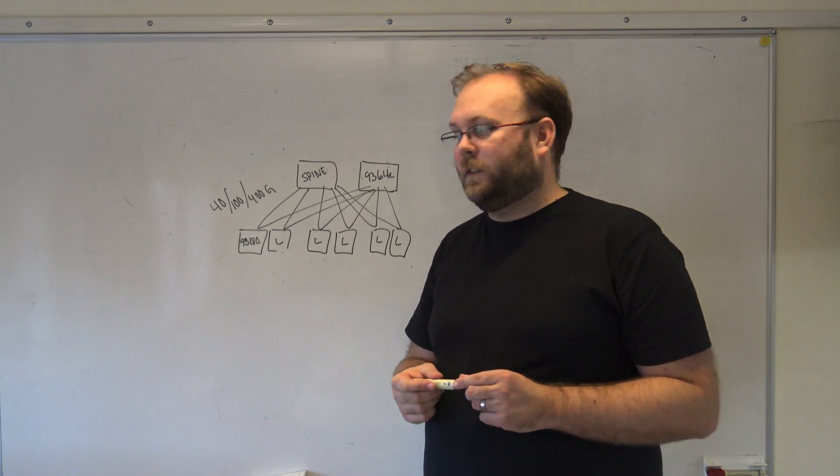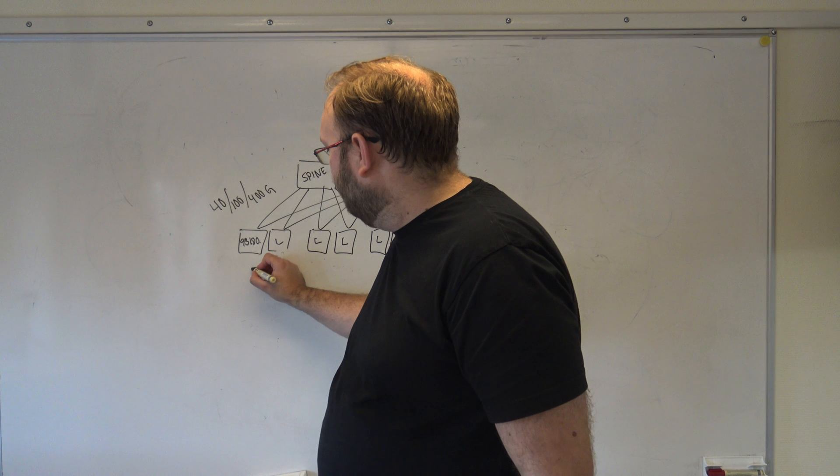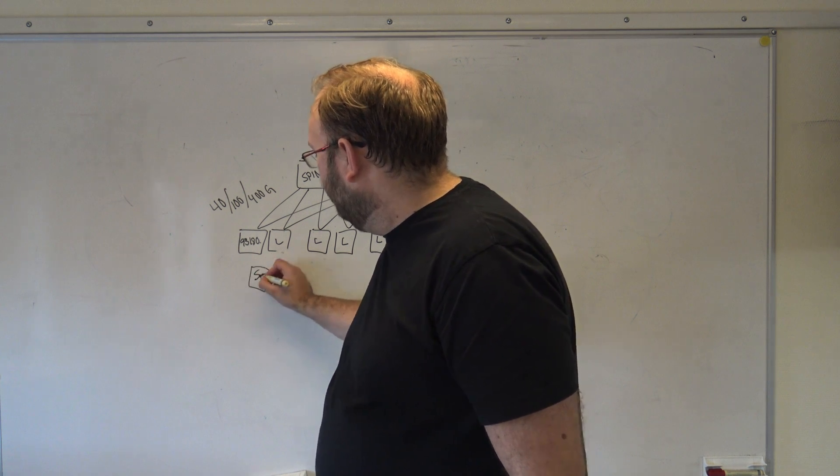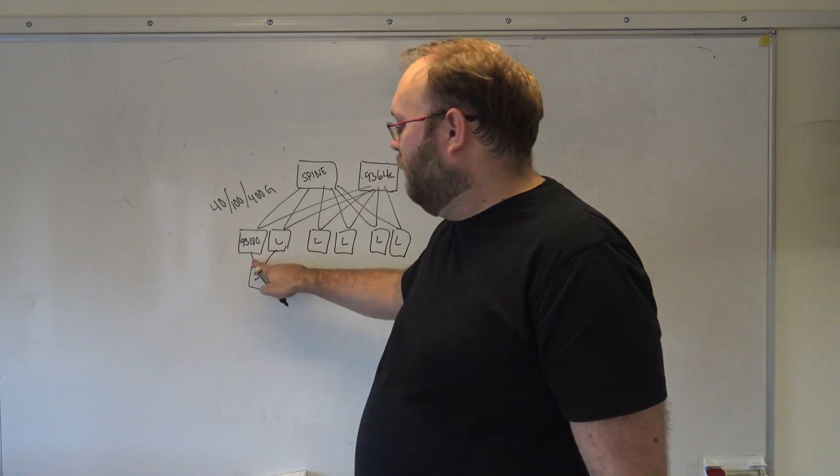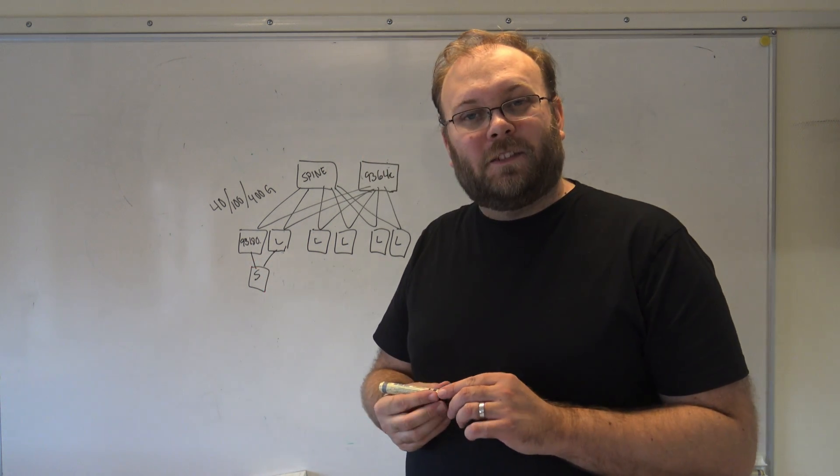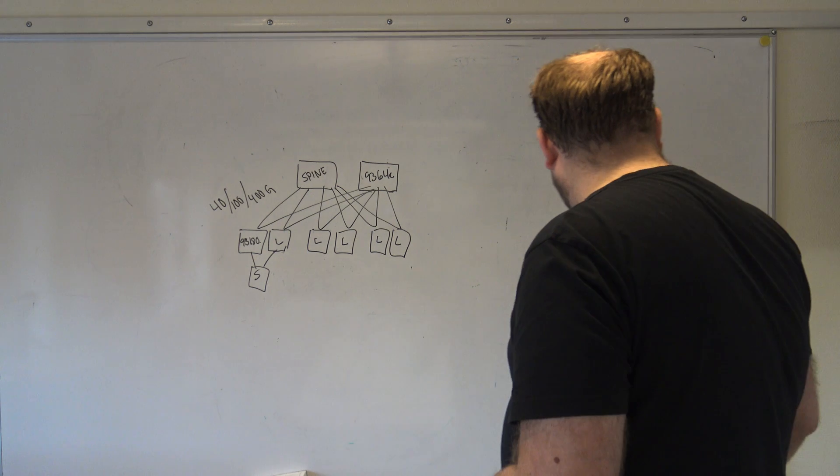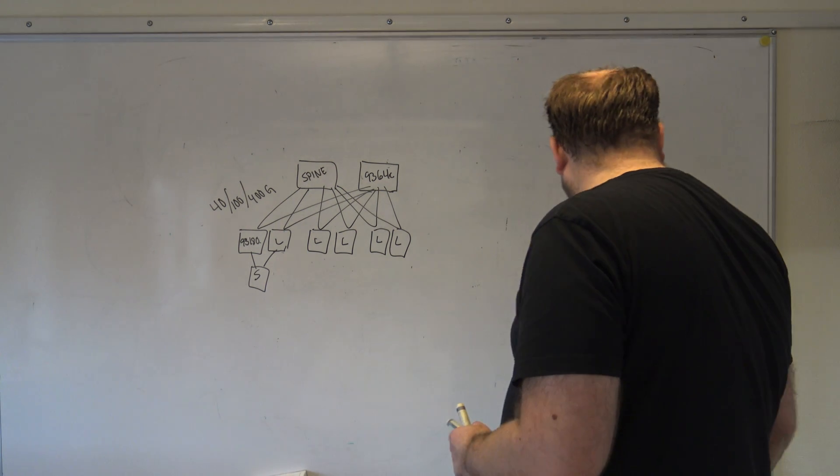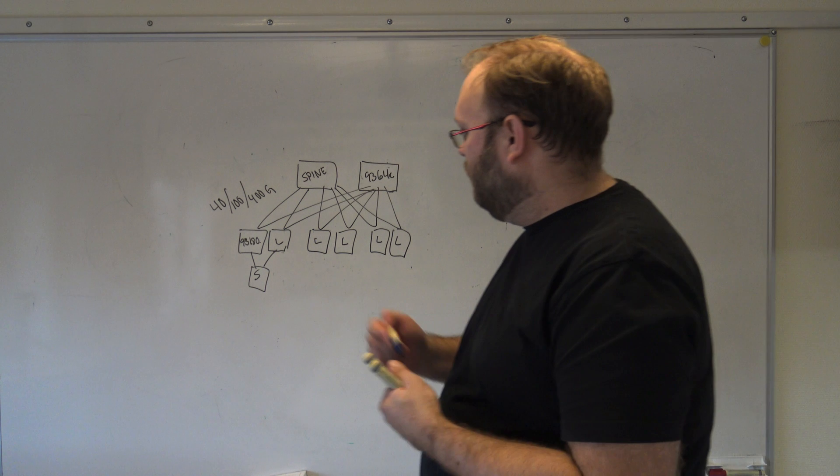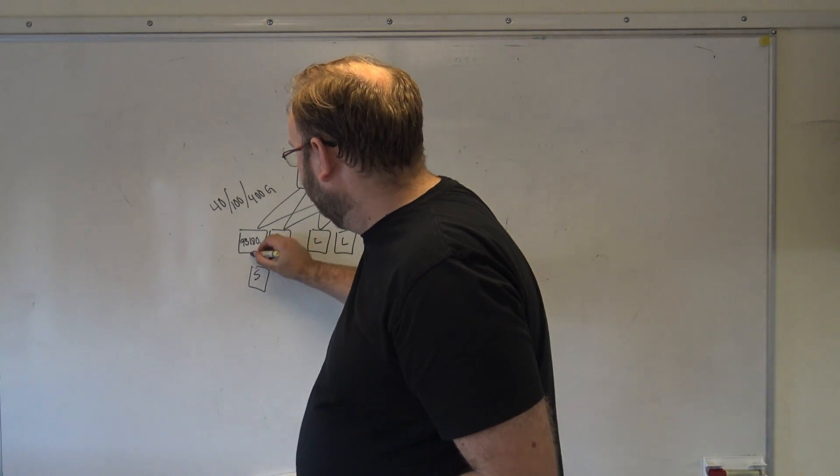And the 93180 has 10-25 gig downlink ports. So if you put the server here, then we can connect it with the VPC with double 10 gigs or double 25 gigs. We will do this in a different color, maybe blue.